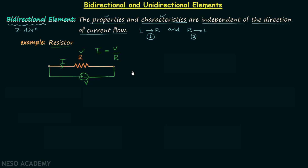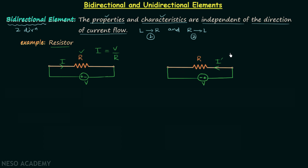Now we take the next case with the same resistor and voltage source, but this time we connect the negative terminal to one side and the positive terminal to the other. Because of this reversed polarity, current I' flows from right to left, and the magnitude of I' is equal to V divided by R. So both I and I' have the same magnitude, with I equal to I' equal to V over R, though they flow in opposite directions.